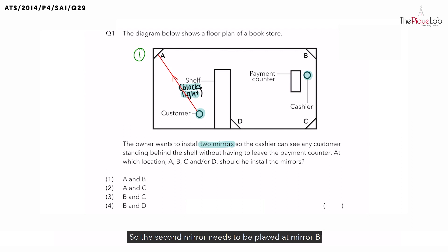So the second mirror needs to be placed at mirror B so that light reflected off A can travel to mirror B. And finally, light that travels to mirror B would be reflected off B into the cashier's eyes, allowing the cashier to see the customer behind the shelf. So the answer for this question would be position A and B. That gives us number one as the answer.